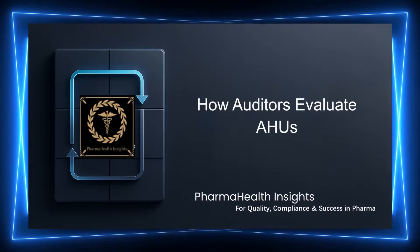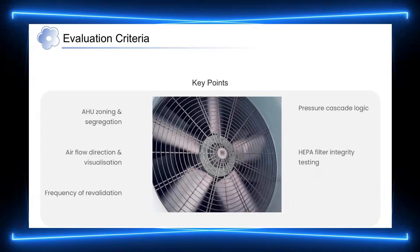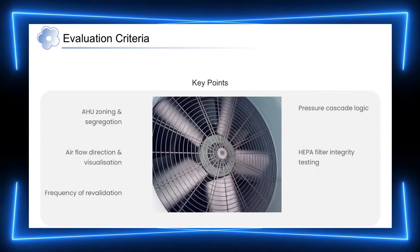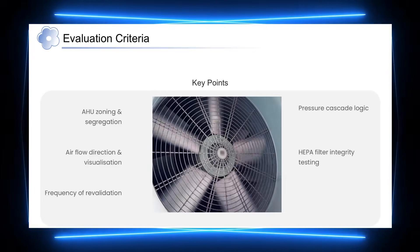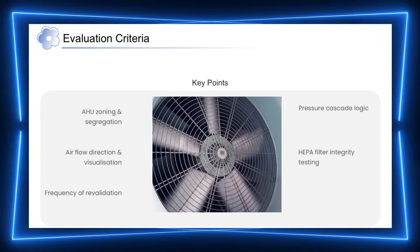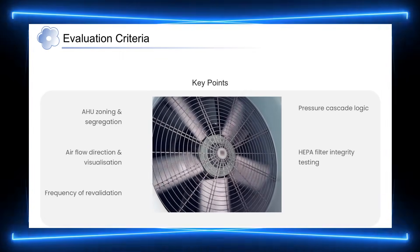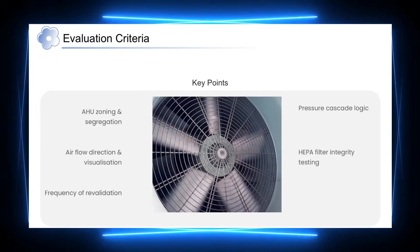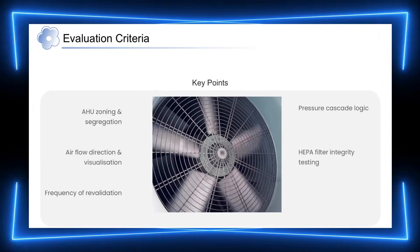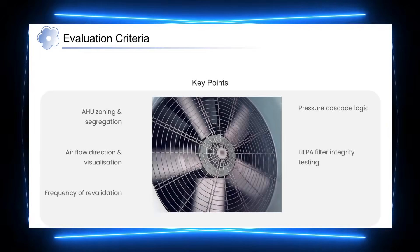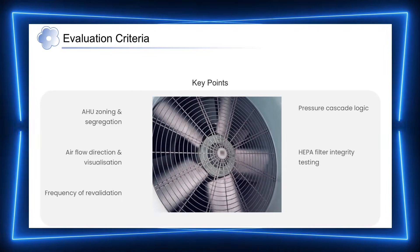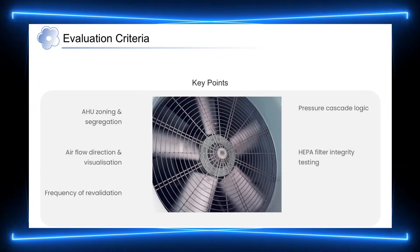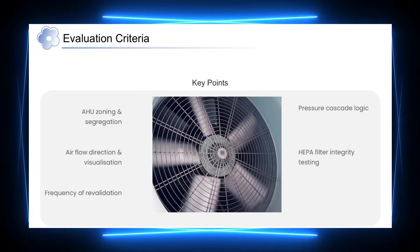This difference becomes crystal clear during audits. Inspectors evaluate AHUs through a risk-based approach. Their primary concern is whether the AHU design and operation can consistently prevent contamination and maintain controlled conditions. They closely examine how AHUs are zoned, how pressure differentials are maintained between areas, and whether airflow moves in the intended direction. Filter integrity, especially HEPA filters, and the frequency of revalidation are also key focus areas. Overall, auditors are not looking for complexity, but for clear logic, consistent control, and effective risk management.